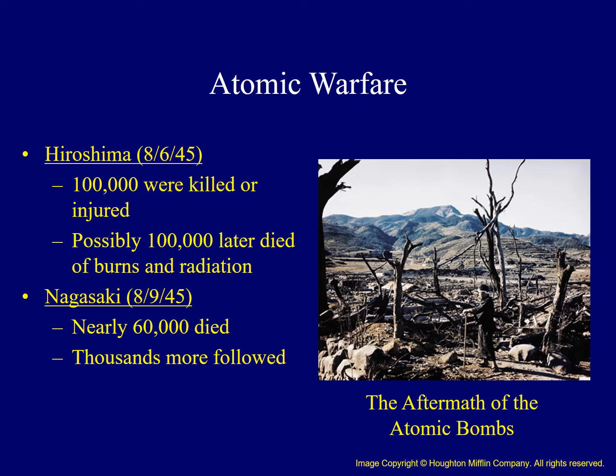Because the Japanese refused to surrender, an atomic bomb was dropped on the city of Hiroshima on August 6, 1945. Immediately, about 100,000 were either killed or injured. Over the next several years, possibly as many as 100,000 more died as a result of burns and exposure to radiation. Three days later, on August 9, a second bomb was dropped on the city of Nagasaki. Immediately, nearly 60,000 people were killed, with thousands more dying over the following years.